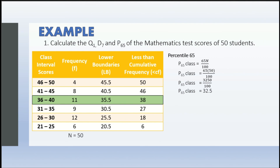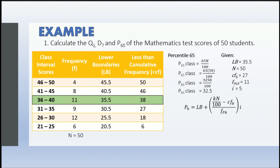After knowing which class interval Percentile 65 belongs to, we can now identify the given values: lb = 35.5, n = 50, cf sub b (cumulative frequency before 38) = 27, frequency = 11, and i = 5 (counting 36, 37, 38, 39, 40). Then we will substitute these into the formula.